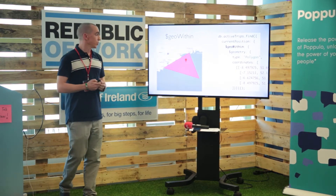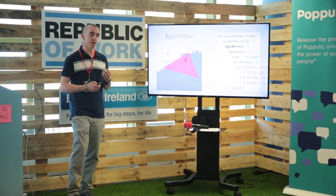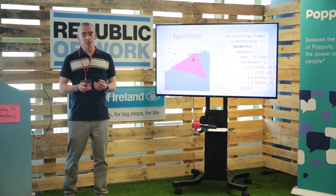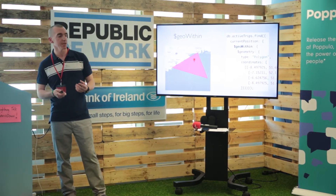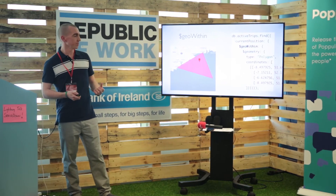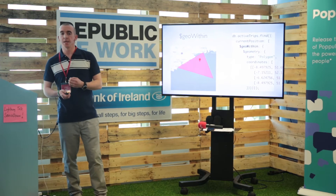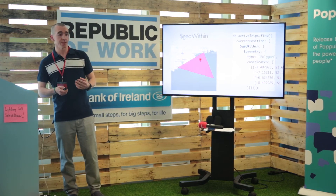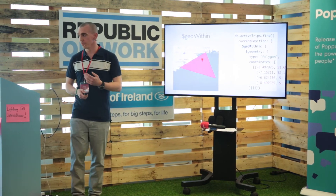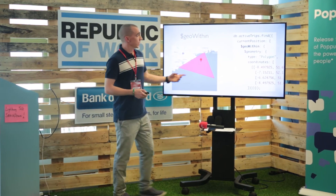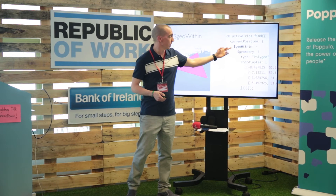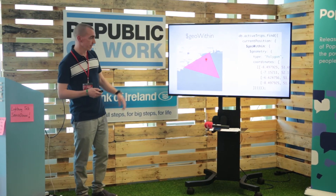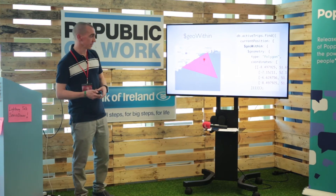The second query we're going to look at is GeoWithin. GeoWithin allows you to search for documents where the GPS position on your document is within a bounded area that you supply. We use this where we've defined a geofence around each Coast Guard flotilla — so boats within a geofence are under the responsibility of that Coast Guard outpost. If there's an emergency, we could escalate to the local Coast Guard first before raising a general alarm. The syntax is still an ActiveTrips find on the collection, searching current position, using $geoWithin, and passing in the polygon — four GPS positions where the first and last are repeated to close the loop for that triangle.